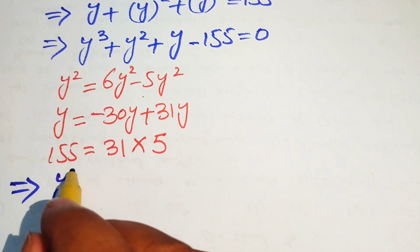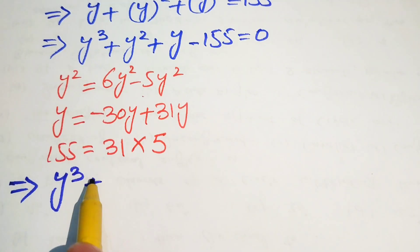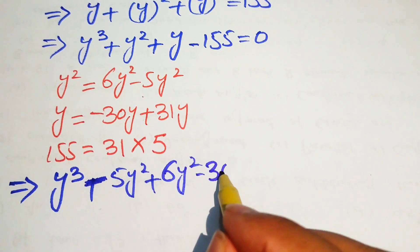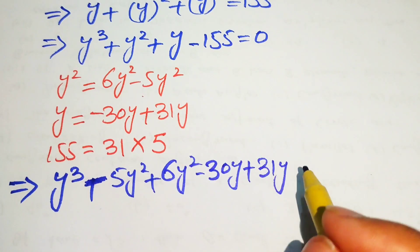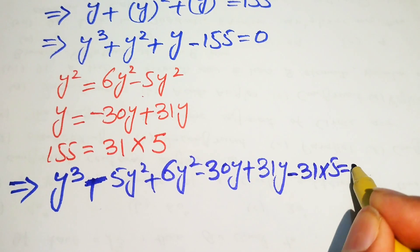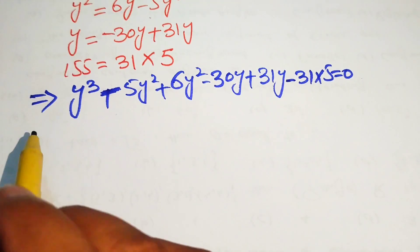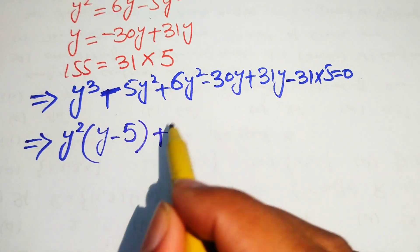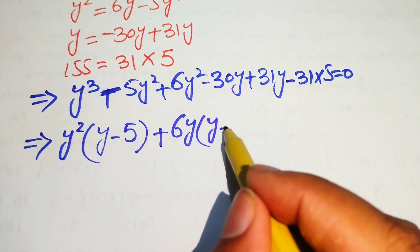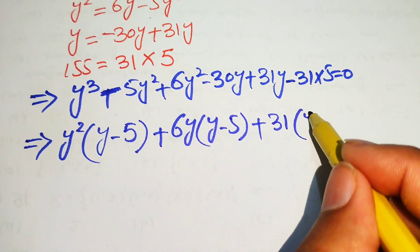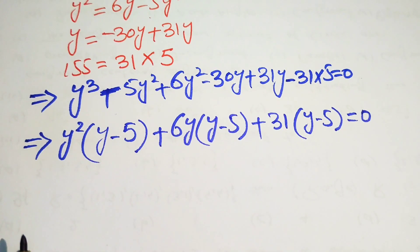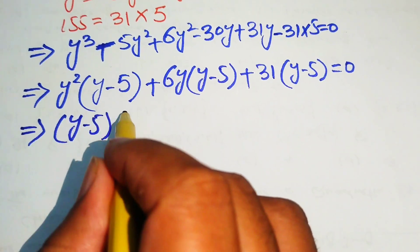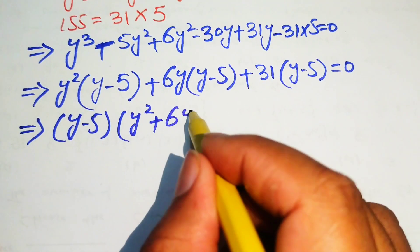Writing it out: y cubed minus 5y squared plus 6y squared plus y minus 30y plus 31y minus 31 times 5 equals 0. We take y squared common from the first two terms to get y squared times (y minus 5), then 6y common to get 6y times (y minus 5), then 31 times (y minus 5). Each term shares the factor (y minus 5).